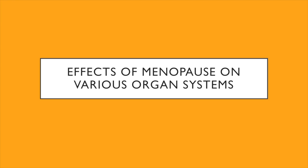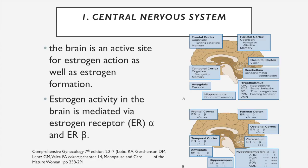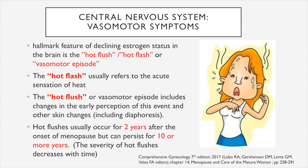We will now discuss the effects of menopause on the various organ systems. First, the central nervous system. The brain is an active site for estrogen action as well as estrogen formation. Estrogen activity in the brain is mediated via estrogen receptor alpha and estrogen receptor beta. The hallmark feature of declining estrogen status in the brain is the hot flush, or hot flash, or a vasomotor episode. These terms are used interchangeably clinically, though strictly speaking, the hot flush refers to the acute sensation of heat, while the hot flash includes changes in early perception and other skin changes, including diaphoresis.